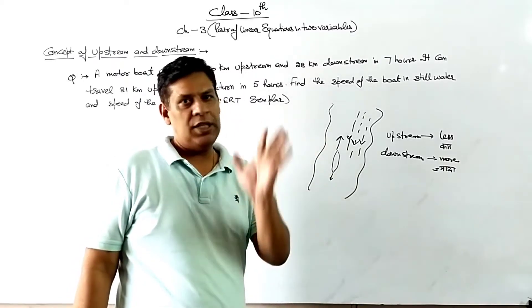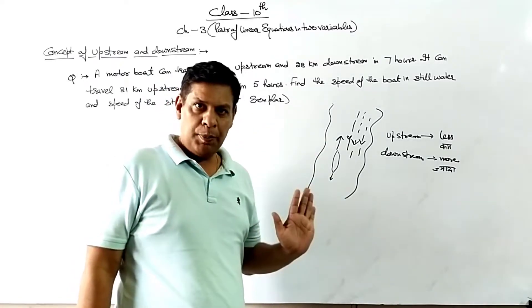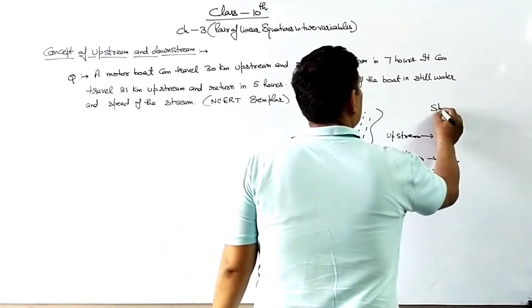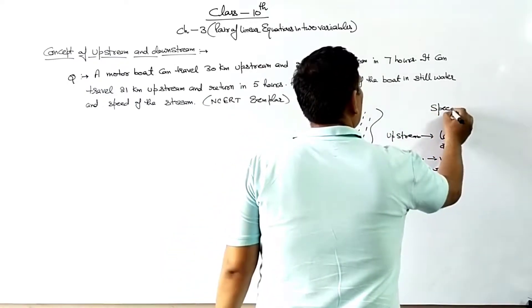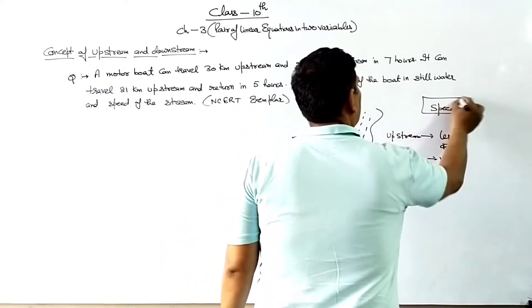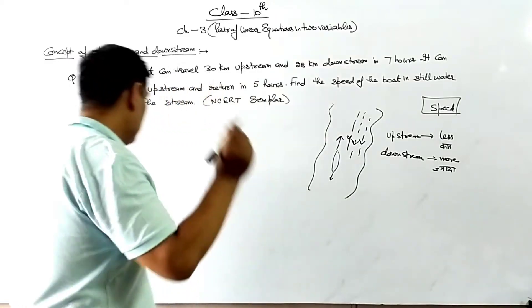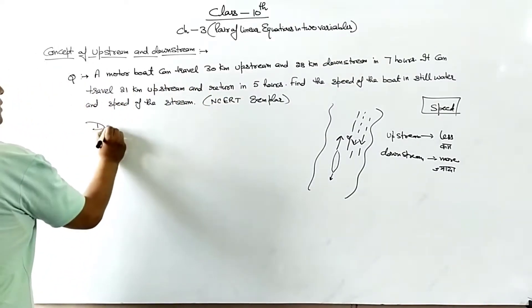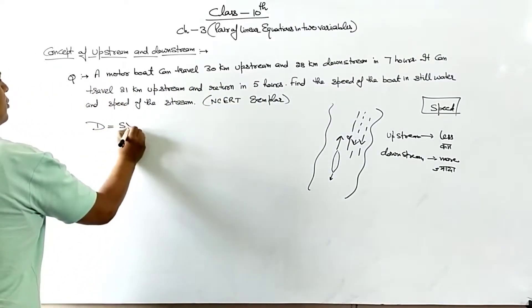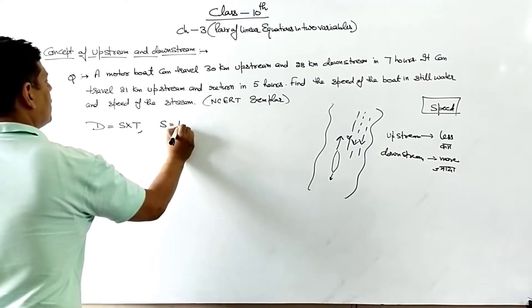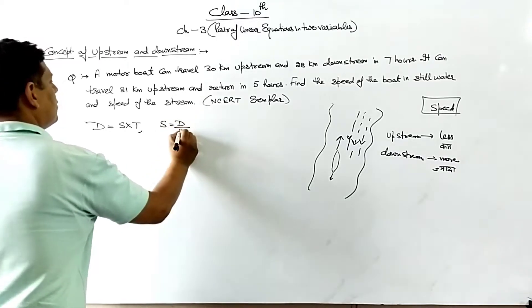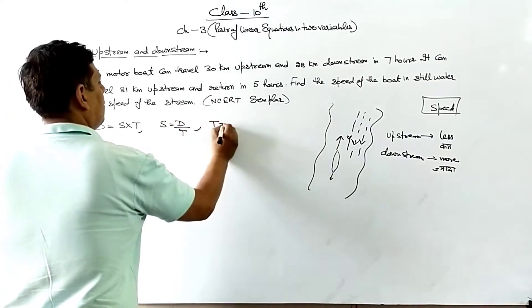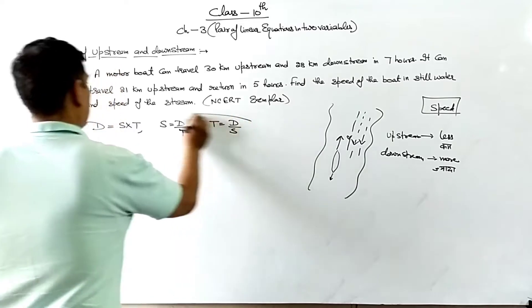Speed, distance, distance — distance is equal to speed into time. Speed is equal to distance by time. And time is equal to distance by speed.